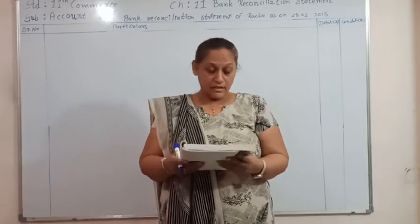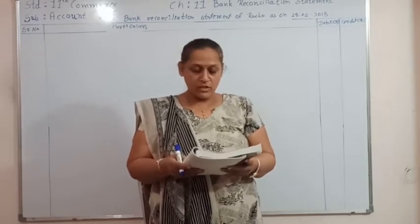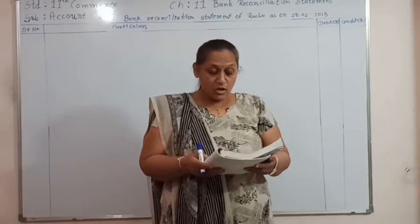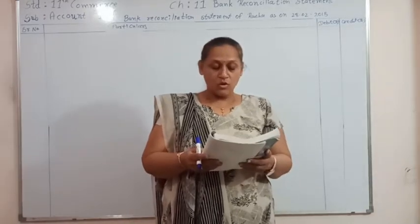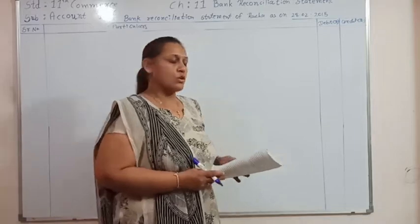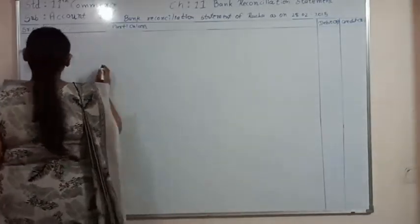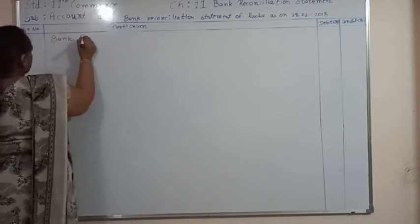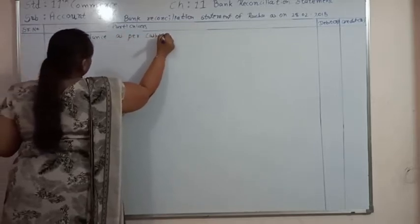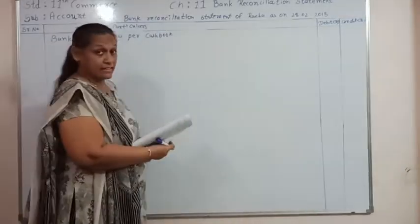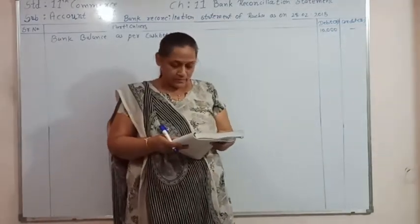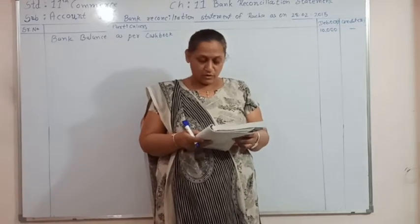Let's see illustration number 6. Bank balance as per cash book of Rucha on 28/2/15 was ₹10,000. It does not tell you the bank balance as per passbook. So here bank balance as per cash book of Rucha is ₹10,000. Let's start the sum with the cash book and work towards the passbook. Bank balance as per cash book is ₹10,000. Bank balance has a debit balance. Now prepare a bank reconciliation statement of Rucha from the following information.